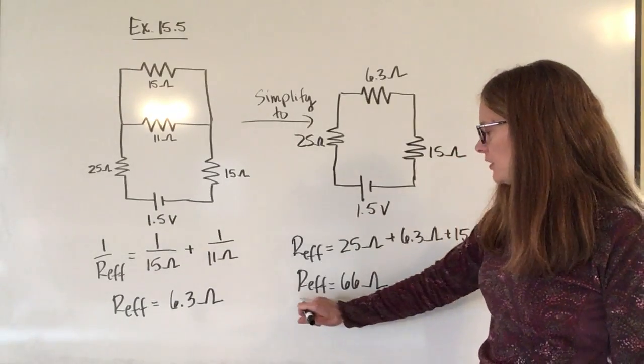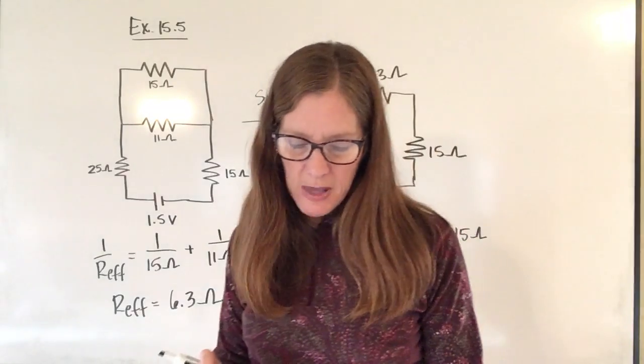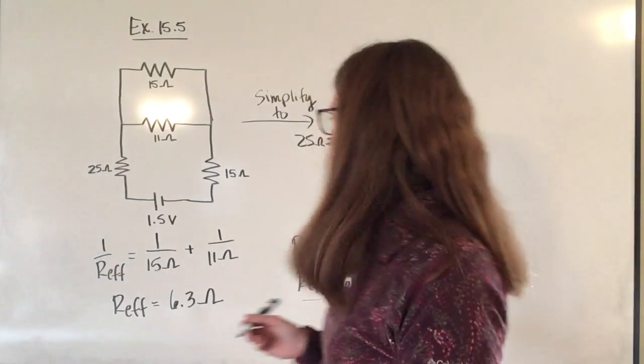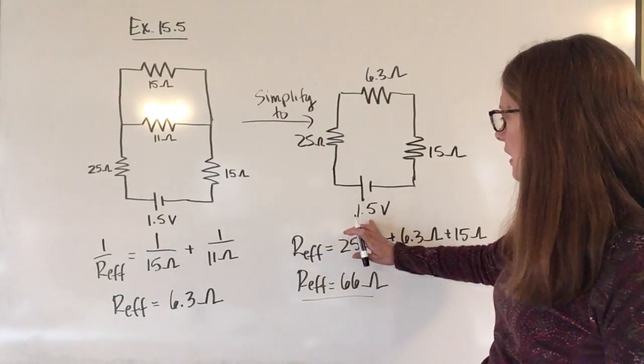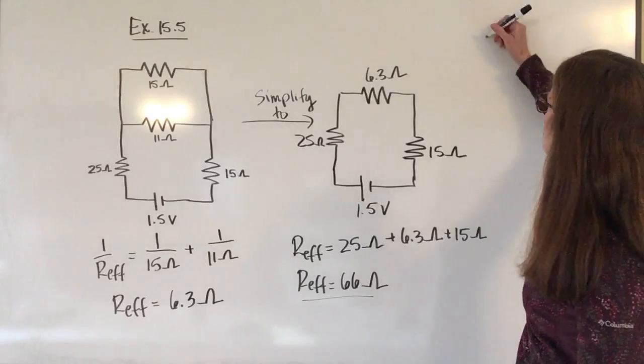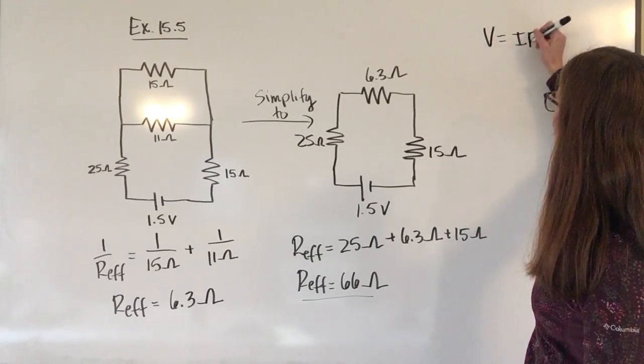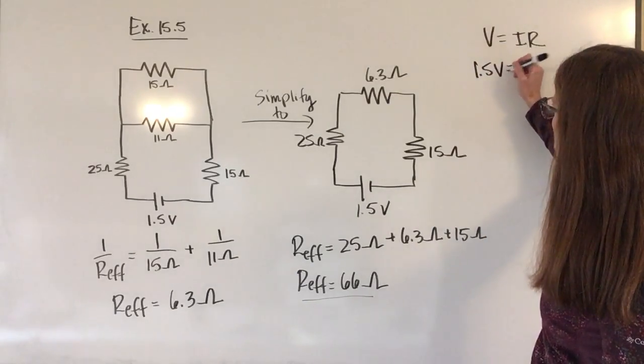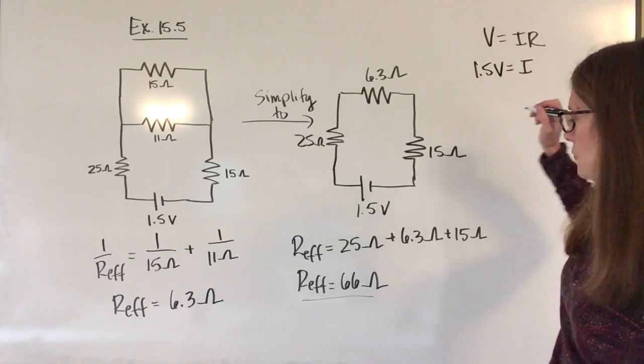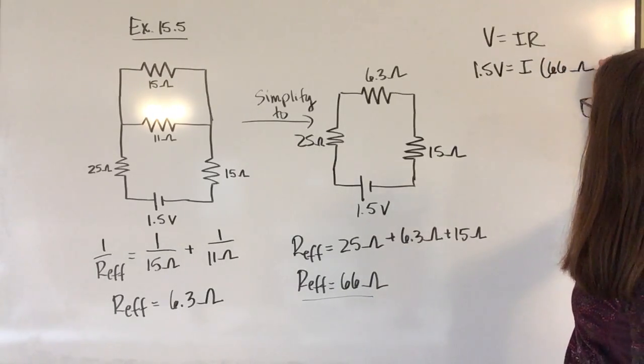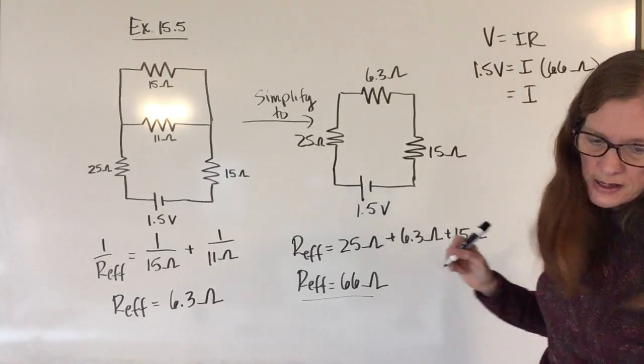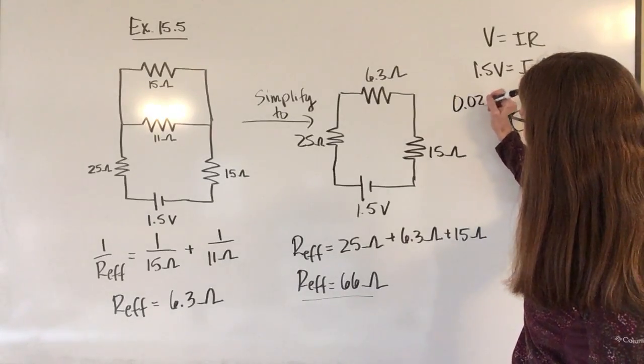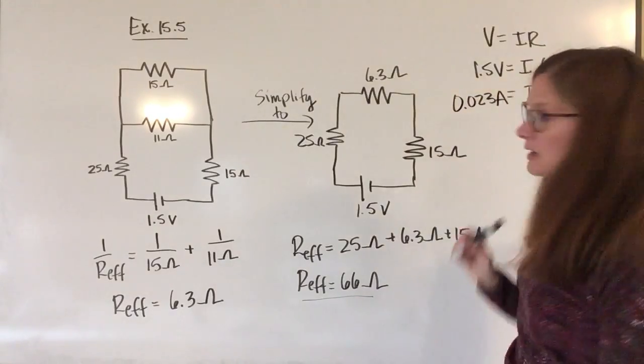Okay, so now that I know the effective resistance for the whole circuit, now I'm able to calculate what the current is going to be running through that circuit because I know resistance and I know voltage. And then I can use ohms law, V equals IR to calculate my current. Voltage is 1.5 volts and the resistance is 66 ohms. And so when I calculate current, that is going to give me 0.023 amps.